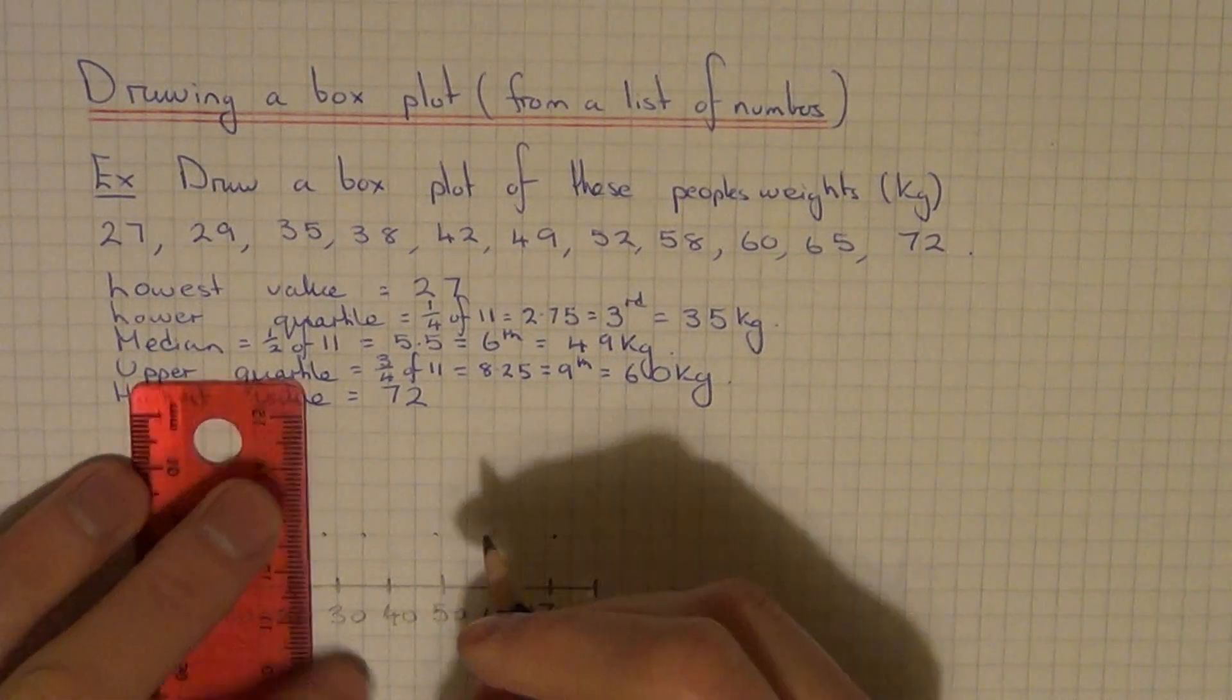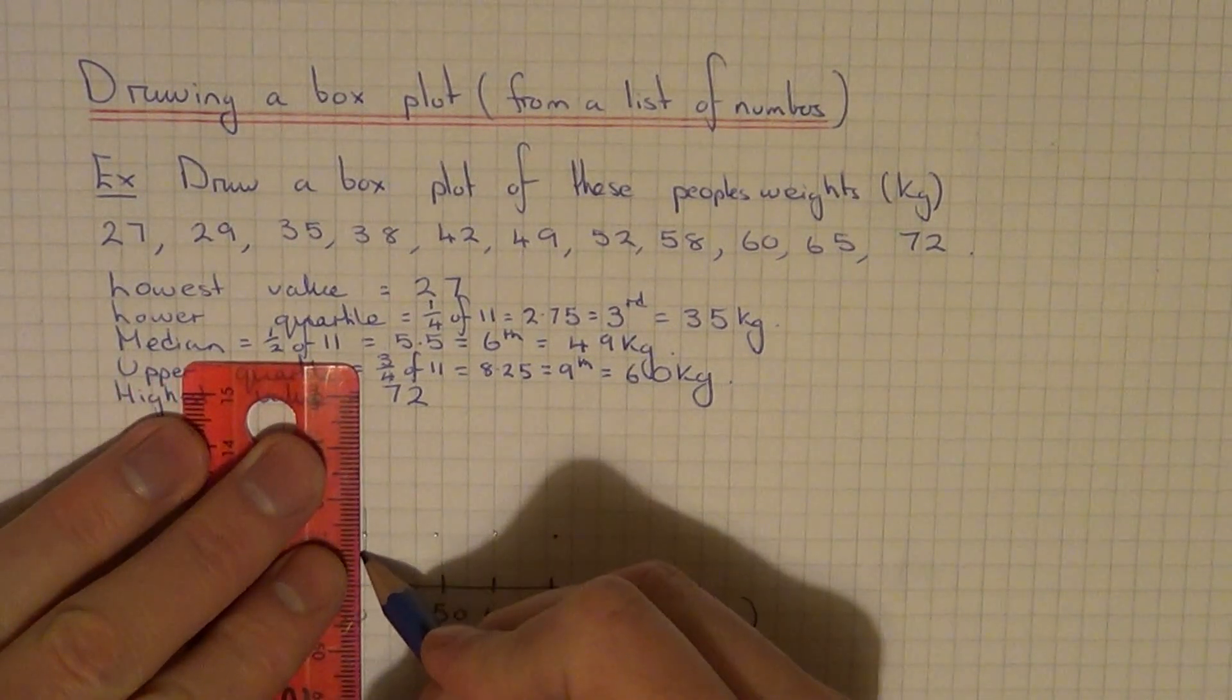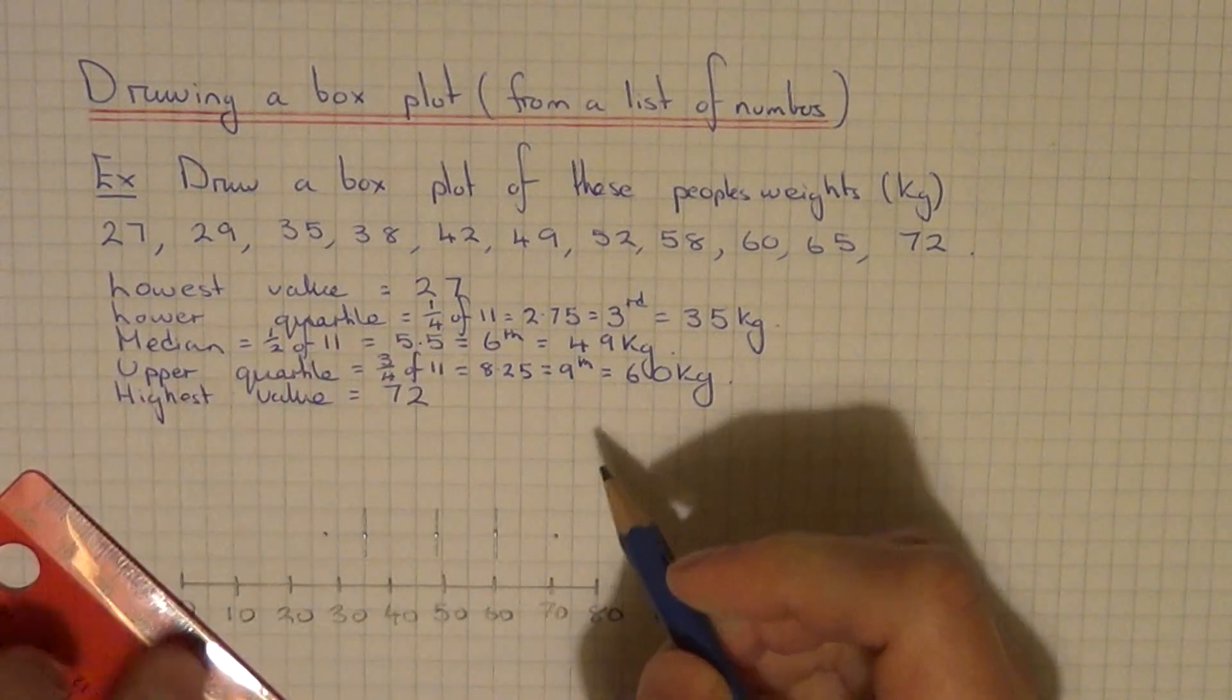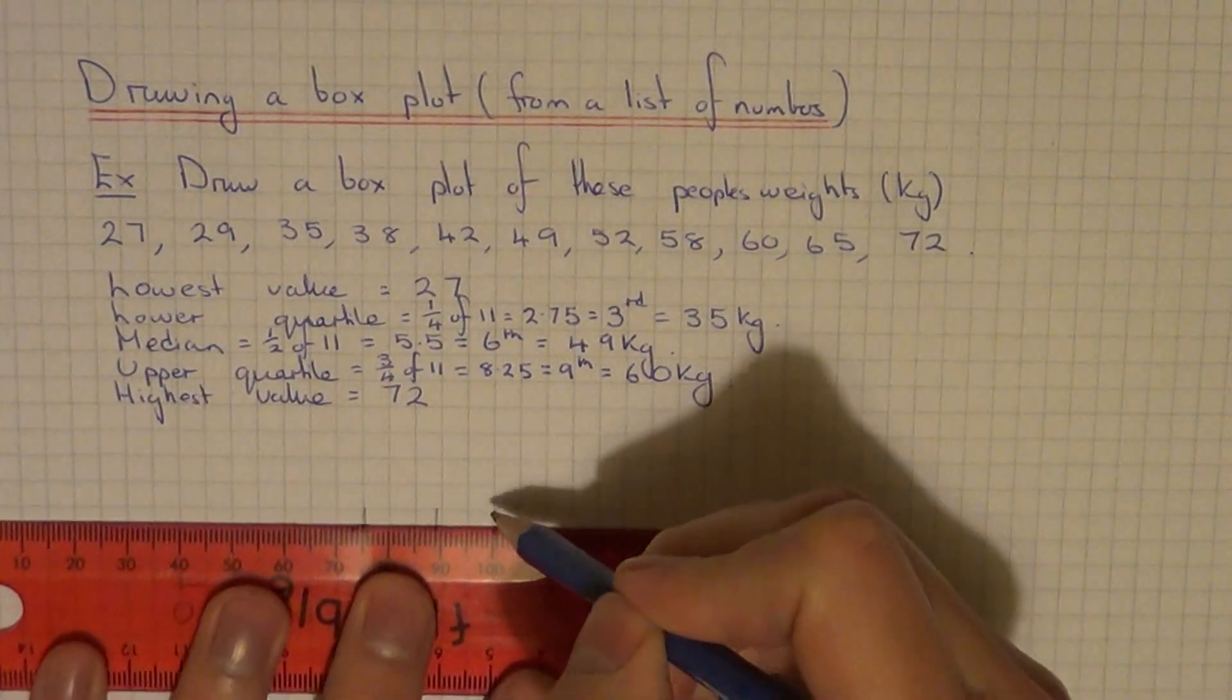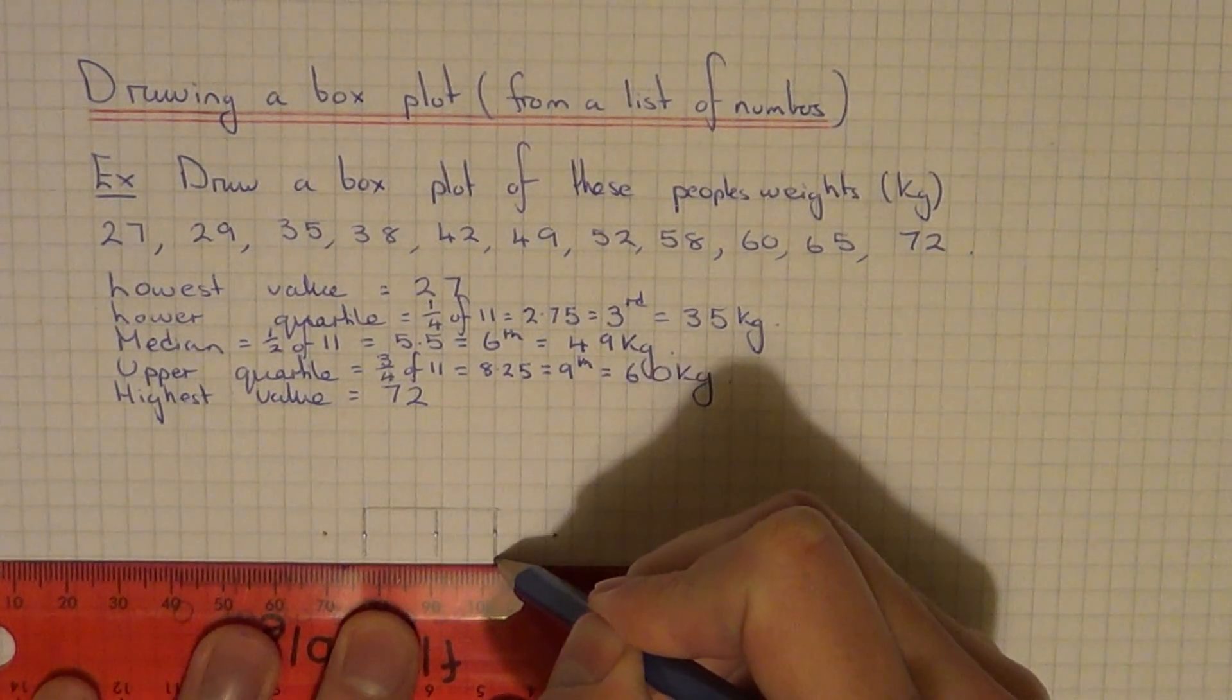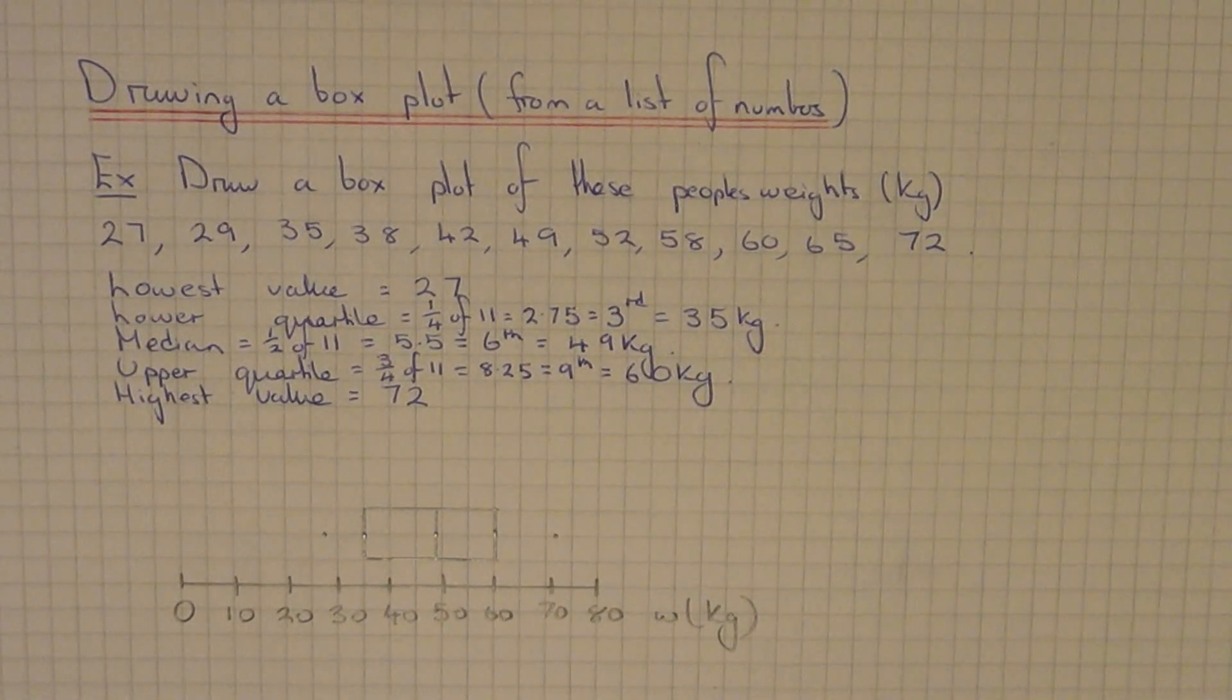Now we draw lines for the three values in the middle: one for the lower quartile, one for the median, and one for the upper quartile. Then just join the tops up and the bottoms up, so we've got a rectangle in the middle.